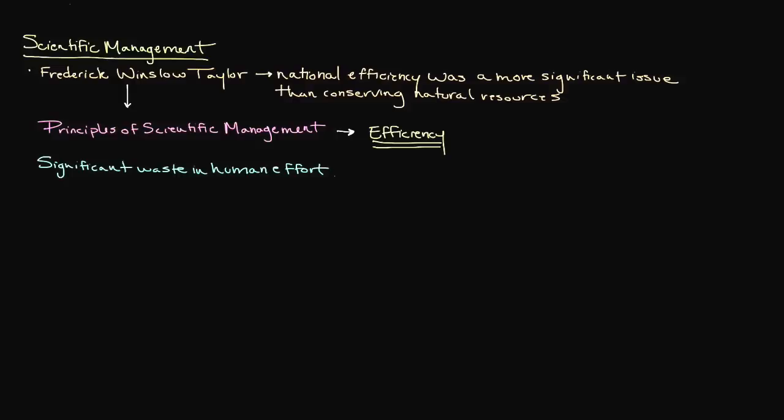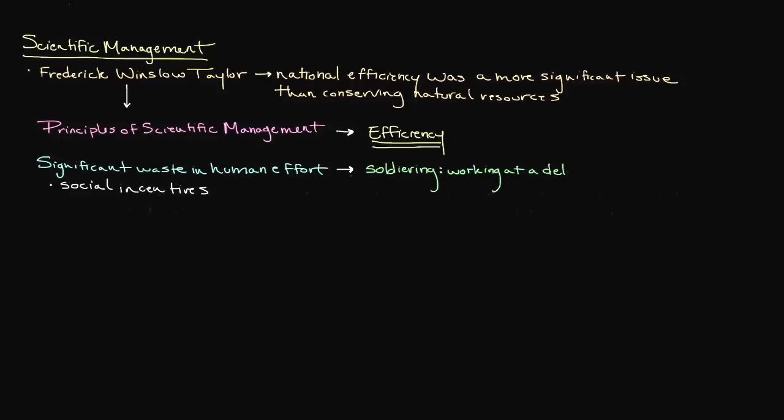He presented a few different reasons for this. The first was that men, who were the only gender present in his studies, had certain social incentives to not increase their productivity. Workers would engage in this concept of soldiering, which essentially means that you would work at a deliberately slow pace to avoid the abuse from co-workers who didn't want management to find out that increasing productivity was a possibility.